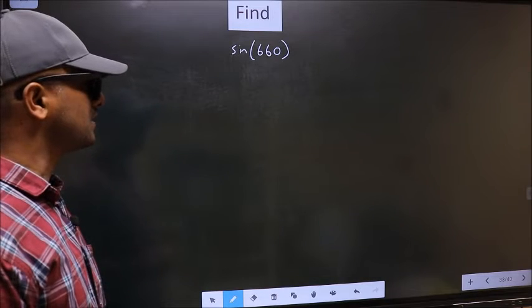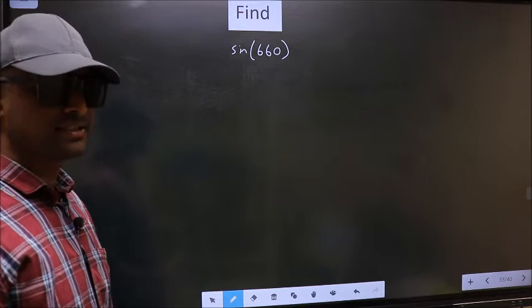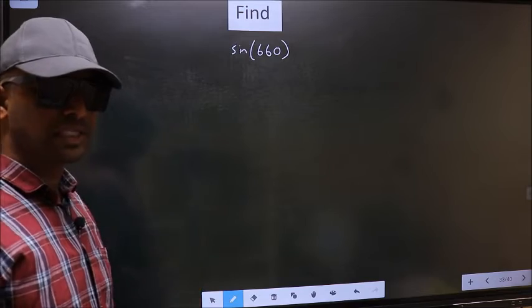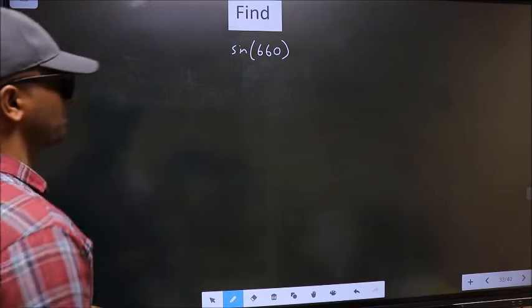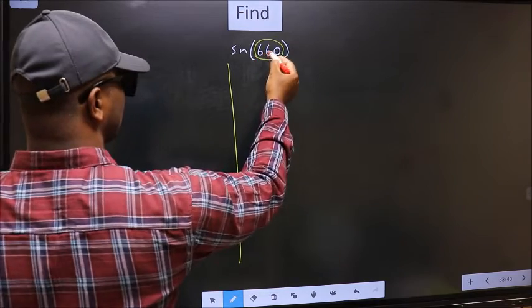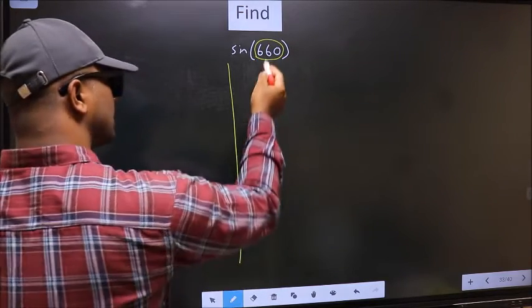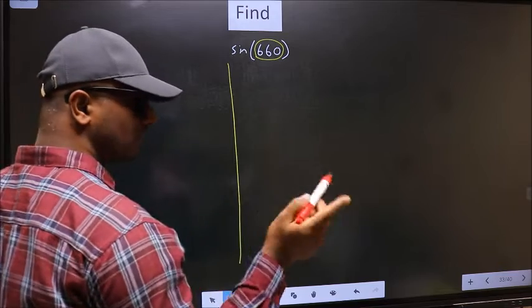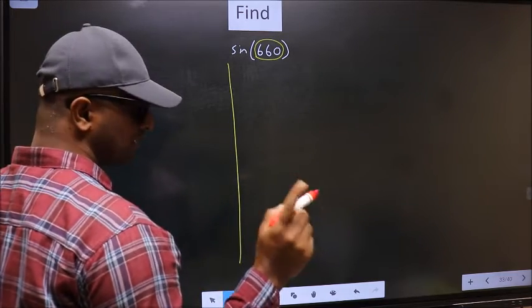Find sin 660. To find this, we should follow this method. See, here we have 660. Now you should check, 660 lies between which two multiples of 180.